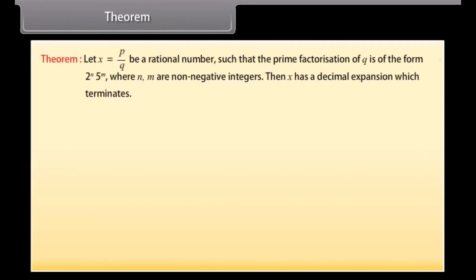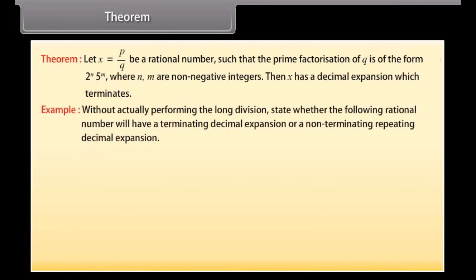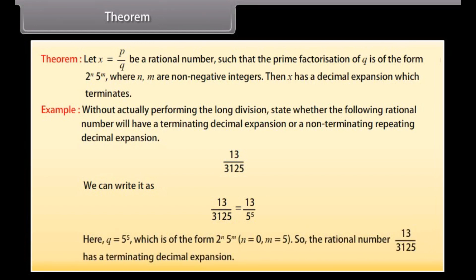Theorem: Let x = p/q be a rational number such that the prime factorization of q is of the form 2ⁿ × 5ᵐ, where n and m are non-negative integers. Then x has a decimal expansion which terminates. Example: Without performing long division, state whether 13/3125 has a terminating or non-terminating repeating decimal expansion. We write 13/3125 = 13/5⁵. Here q = 5⁵, which is of the form 2ⁿ × 5ᵐ with n = 0 and m = 5. So 13/3125 has a terminating decimal expansion.